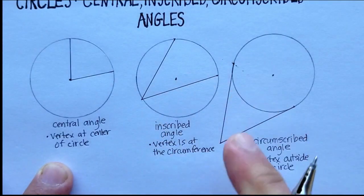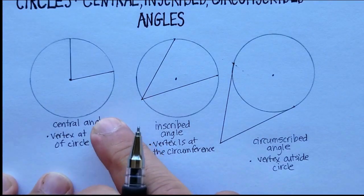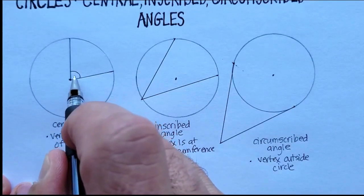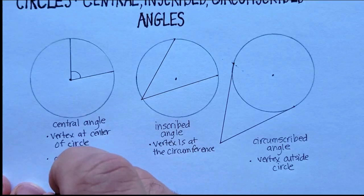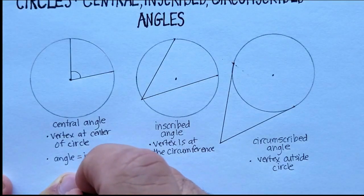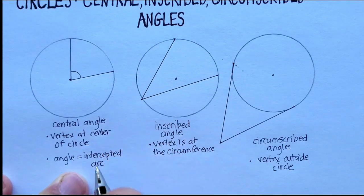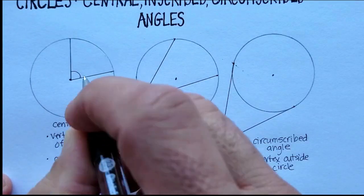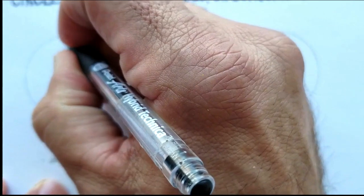Because of the vertex position, each angle type has different characteristics for how you calculate them. For a central angle, the number of degrees of the angle is equal to the number of degrees of the intercepted arc. So if the angle is 80 degrees, then the arc is also 80 degrees.